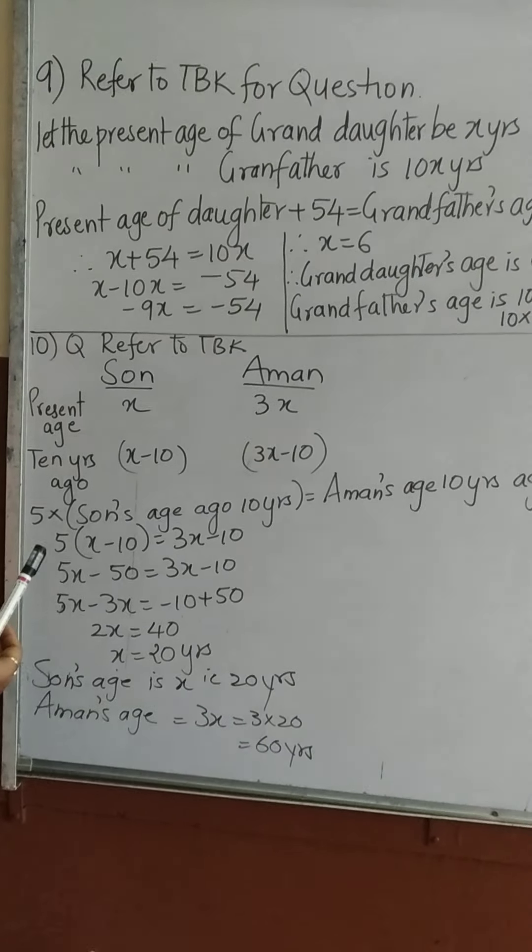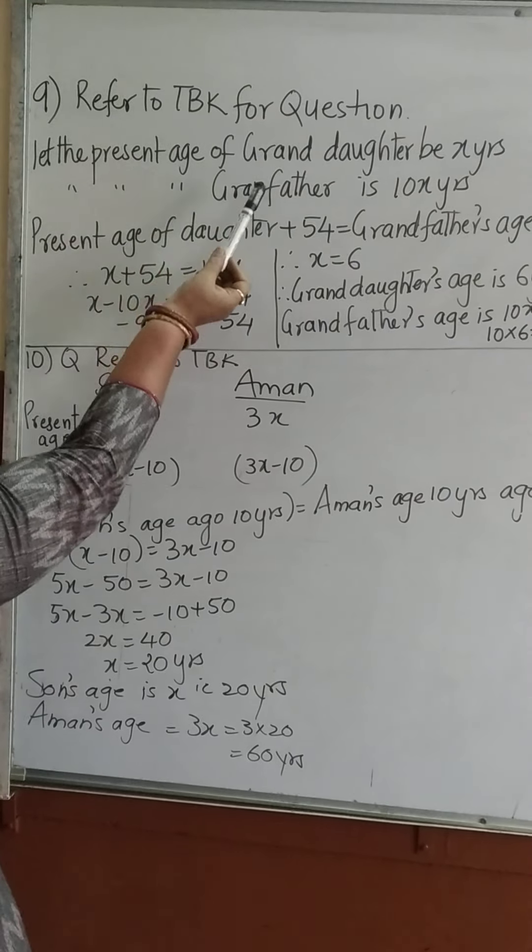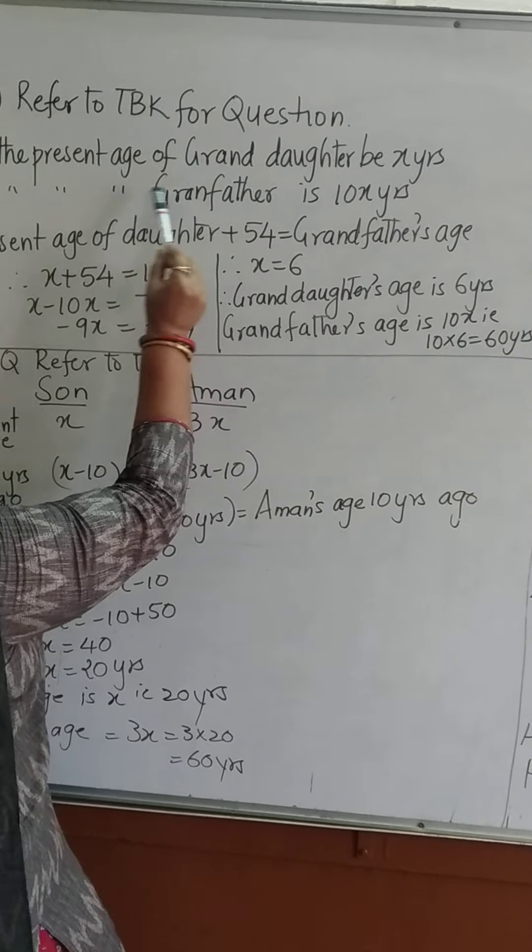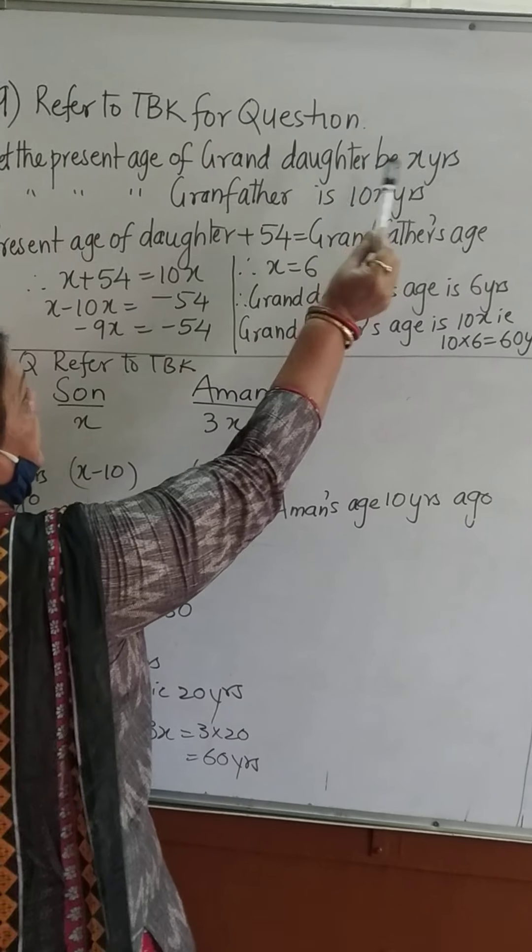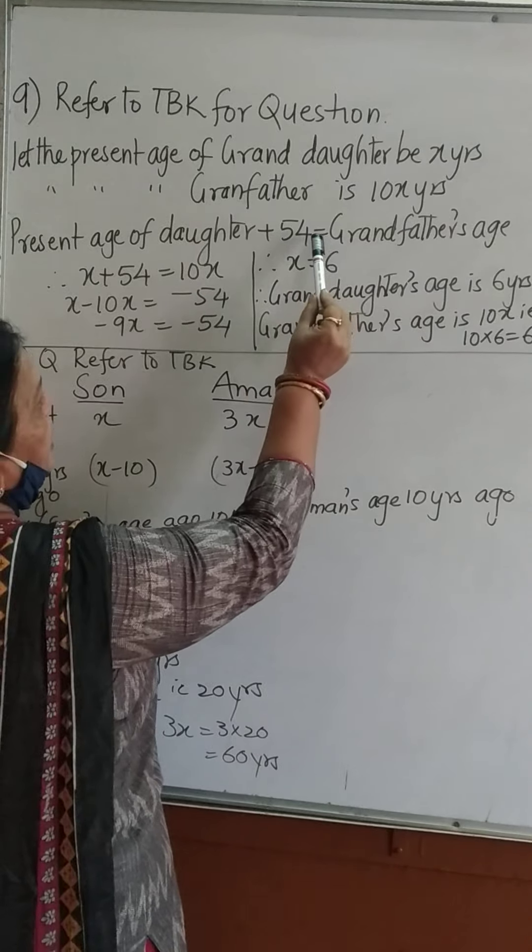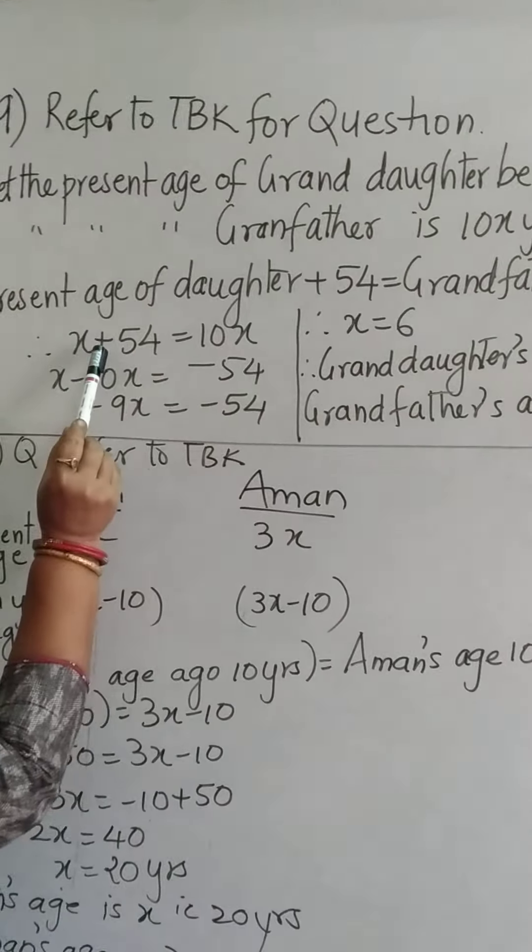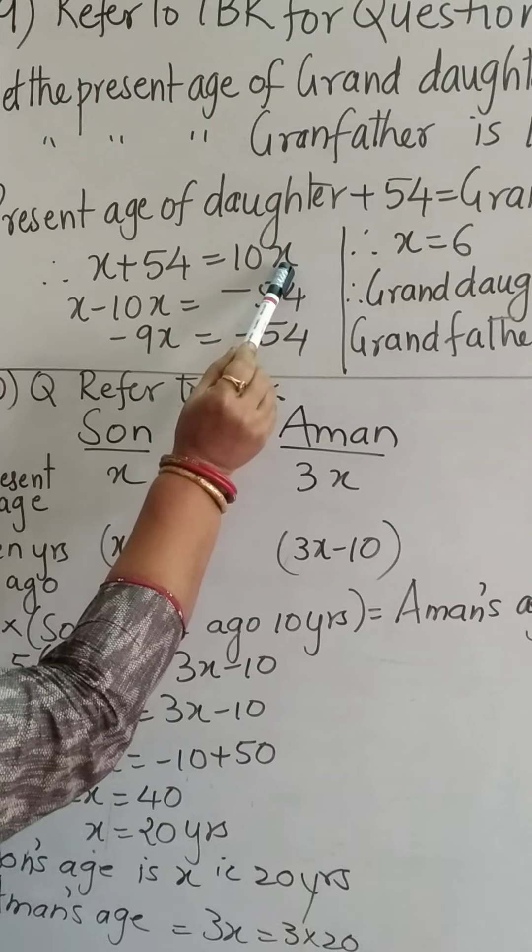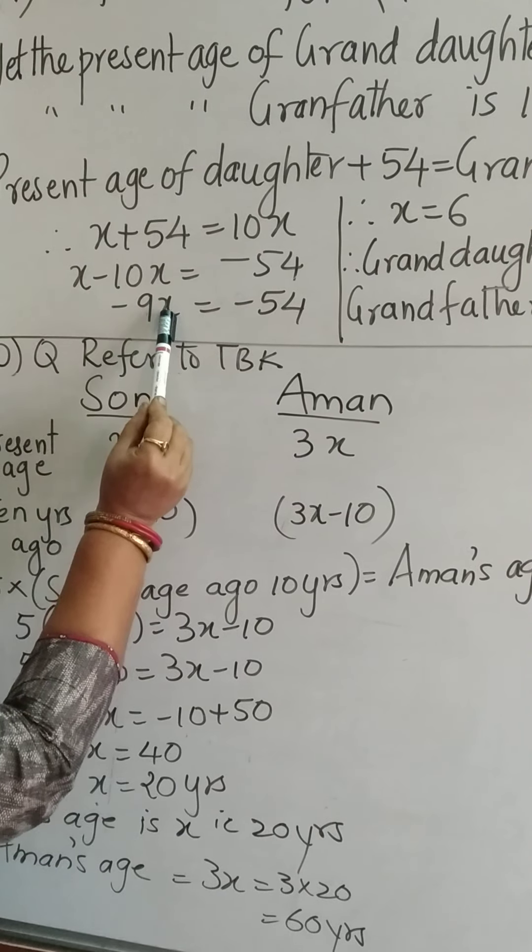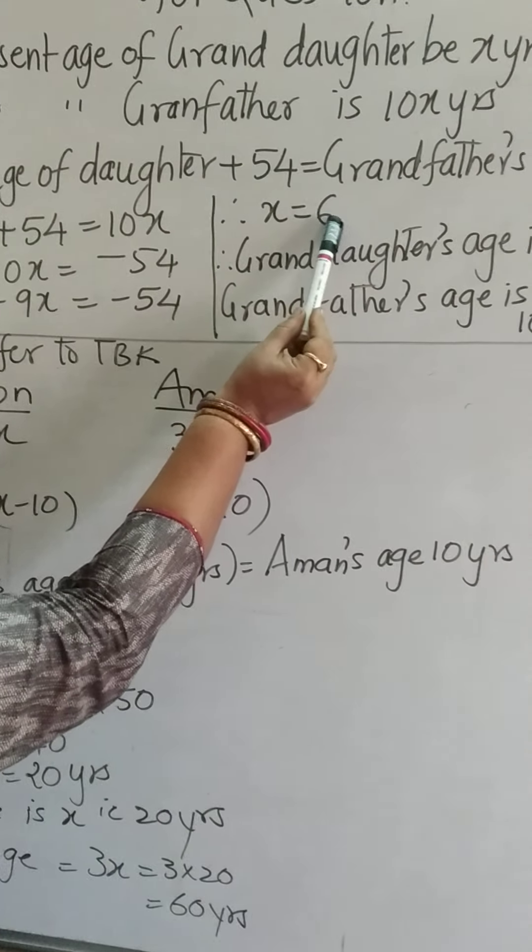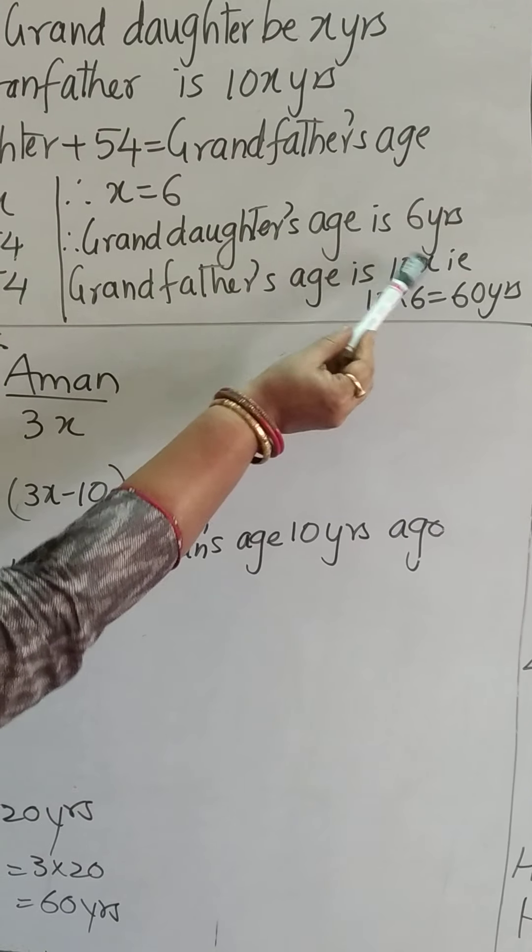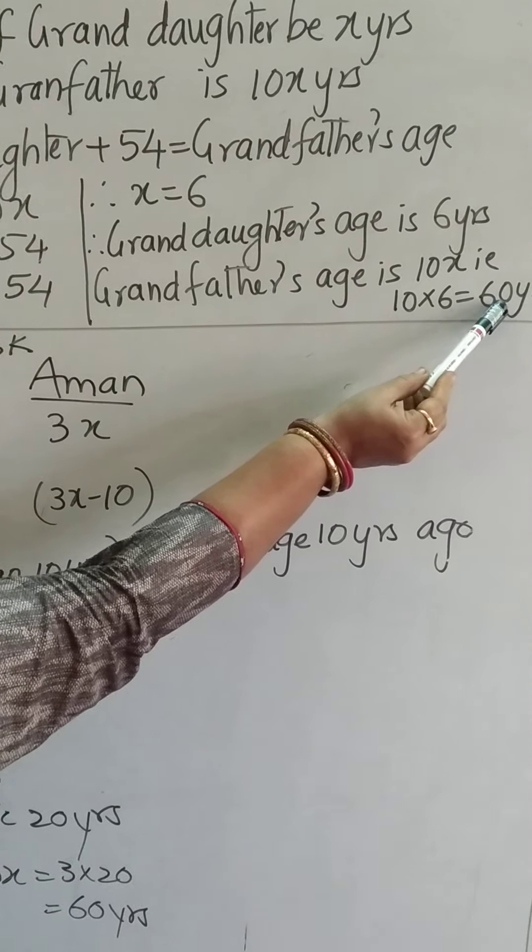Question number 9. Please read from the textbook. Let the present age of granddaughter be x years, and grandmother's age is 10x, 10 times. Present age of granddaughter plus 54 is equal to grandmother's age. So x plus 54 is equal to 10x. x minus 10x is equal to minus 54. Minus 9x is equal to minus 54. So x will be 6. So granddaughter's age is 6 years, and grandfather's age is 10x, 10 times 6 are 60 years.